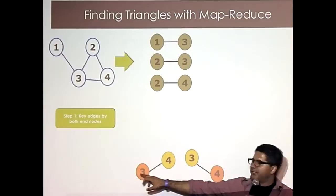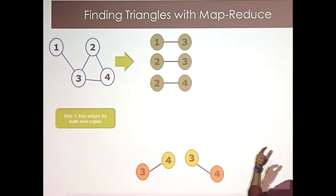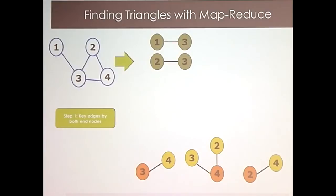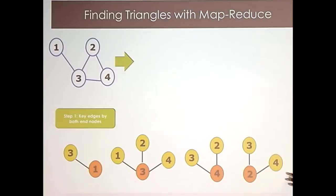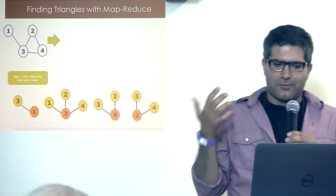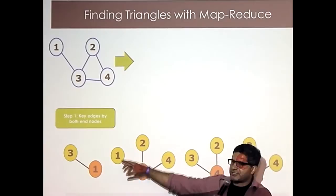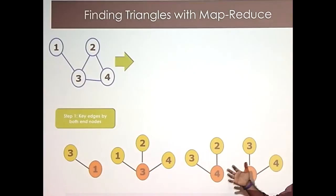So in each bucket, the center node has access to its neighbors — I've collected the neighbors under each node. The next thing is that the center node and any pair of its neighbors could potentially be a triangle. At this level, all we know is that node three has neighbors one, two, and four. But is there really a triangle? It depends on whether any of those edges actually exist.